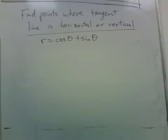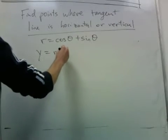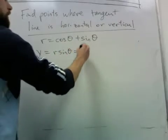Now to find horizontal tangents we have to look at Y. So Y is R sine theta, which in this case is cosine theta plus sine theta times sine theta.